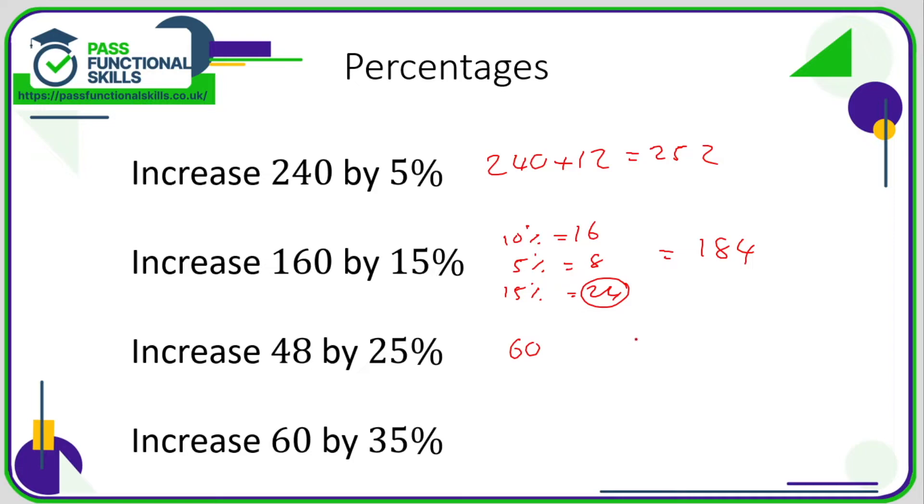This one would be quite difficult to work out using the 10%, mainly because the number doesn't end in a zero here. But if you're comfortable dividing 48 by 10, that is 4.8. So we've got two 4.8 and half of a 4.8, which is 2.4. And if we add those together, we will get 12, and again we need to add the 12 to the 48.